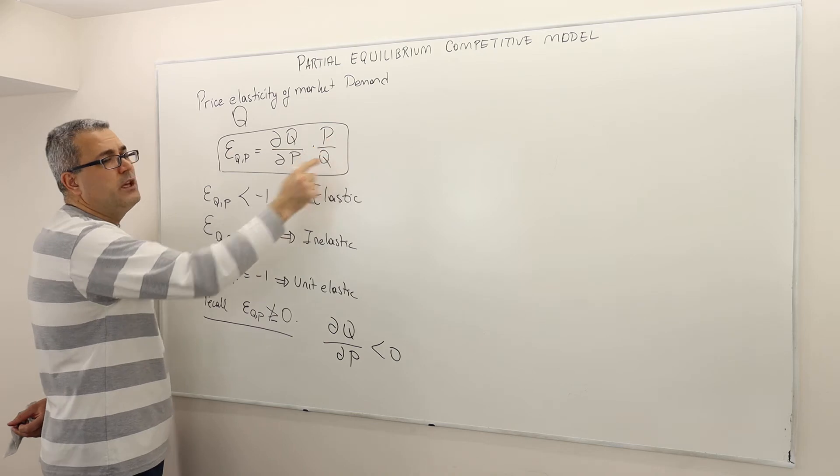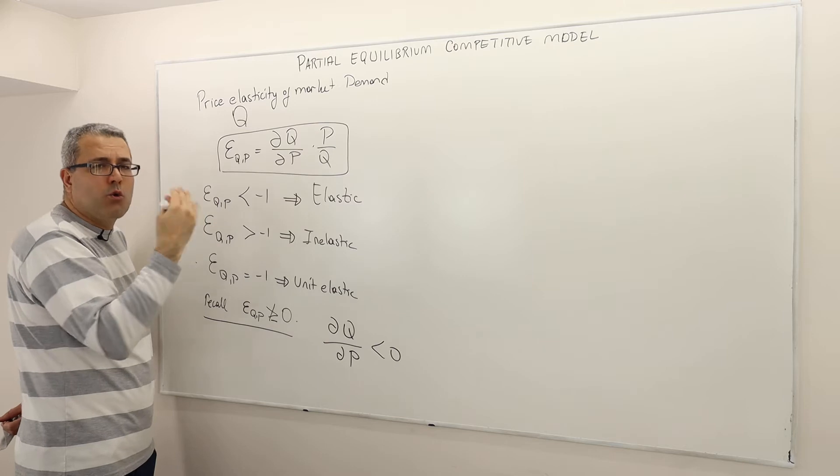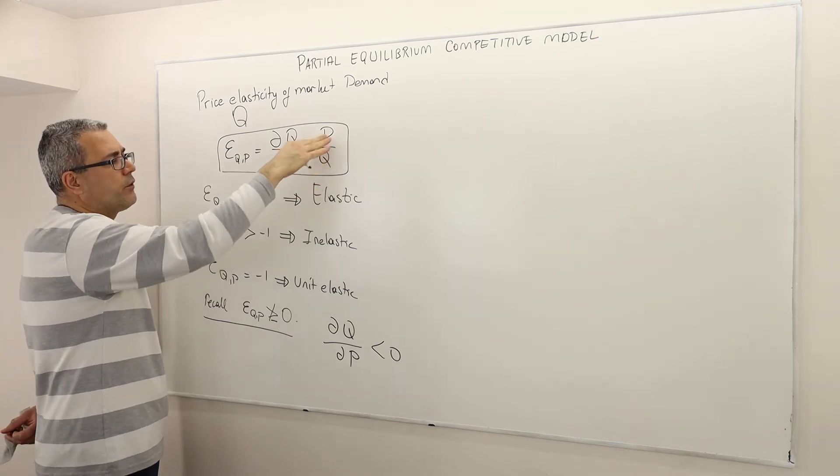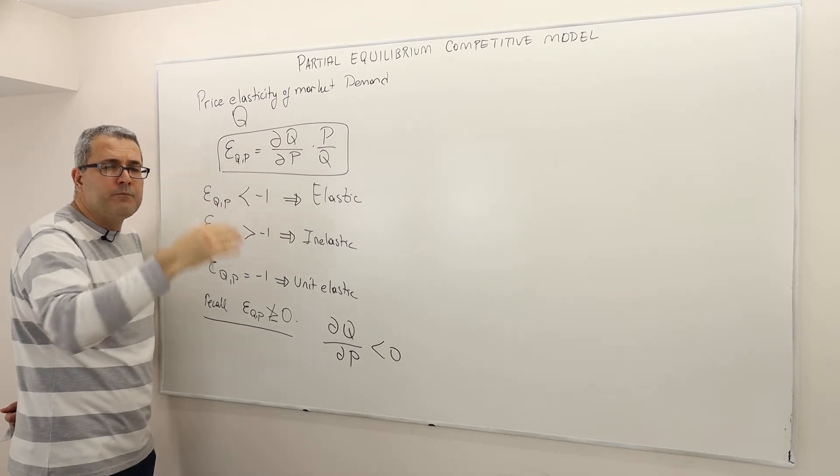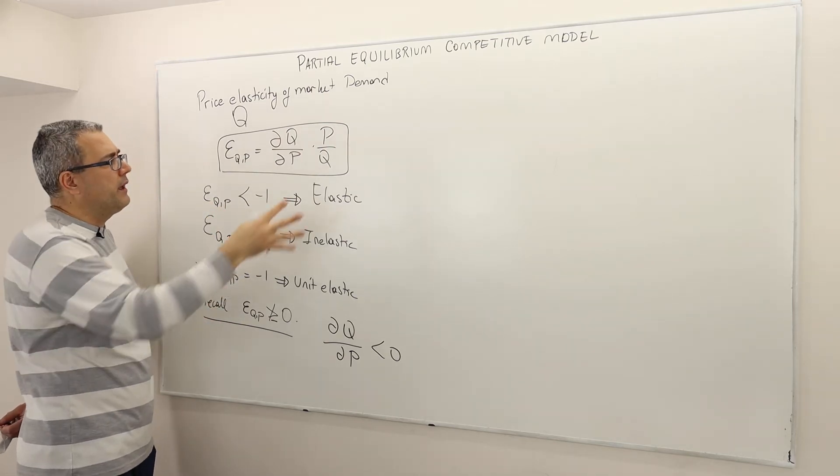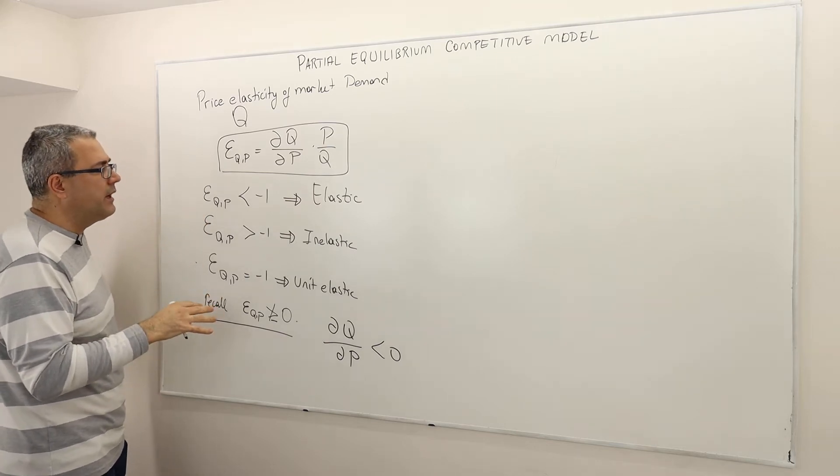And so for any PQ levels, price is always positive, quantity is always positive. So for any PQ level, because this ratio is negative, because the demand curve is downward sloping, elasticity should always be a negative number.